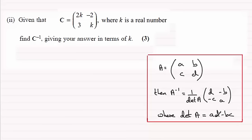where the determinant of A is AD - BC, and then it's multiplied by the matrix where you switch these two elements around and change the sign on the elements B and C.